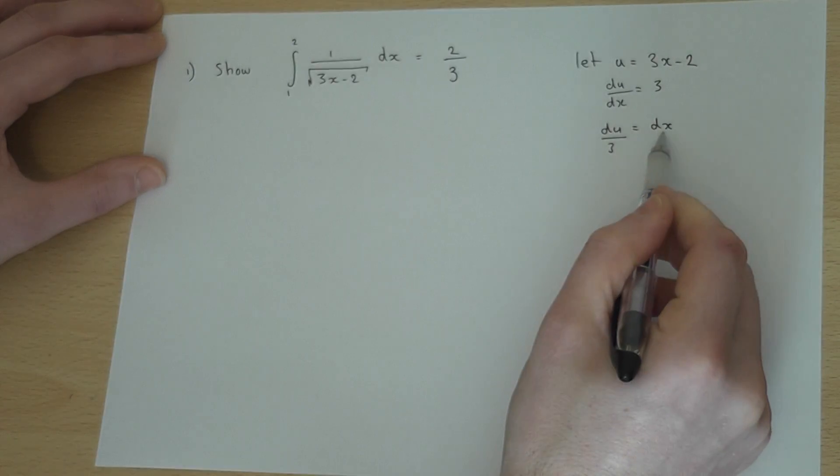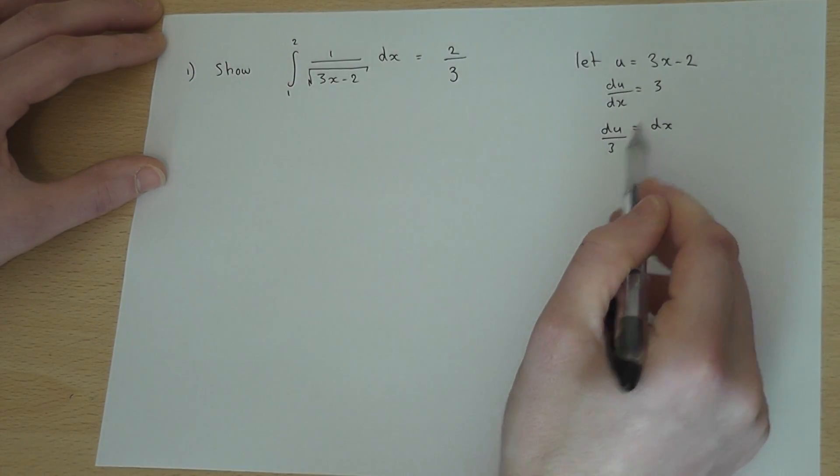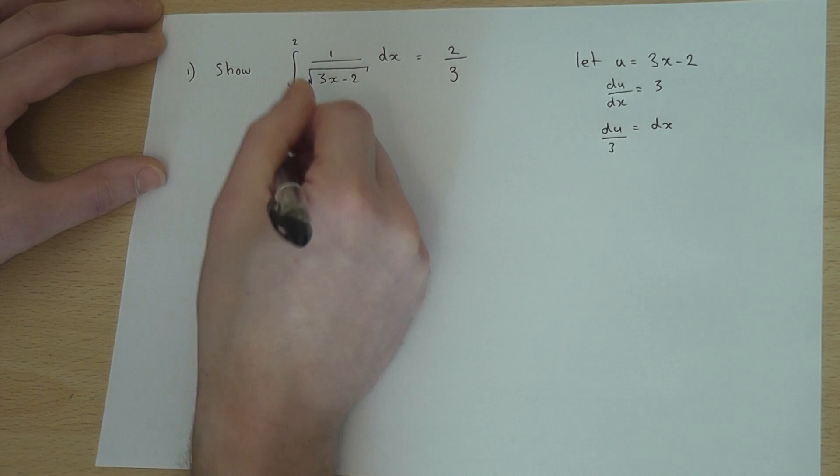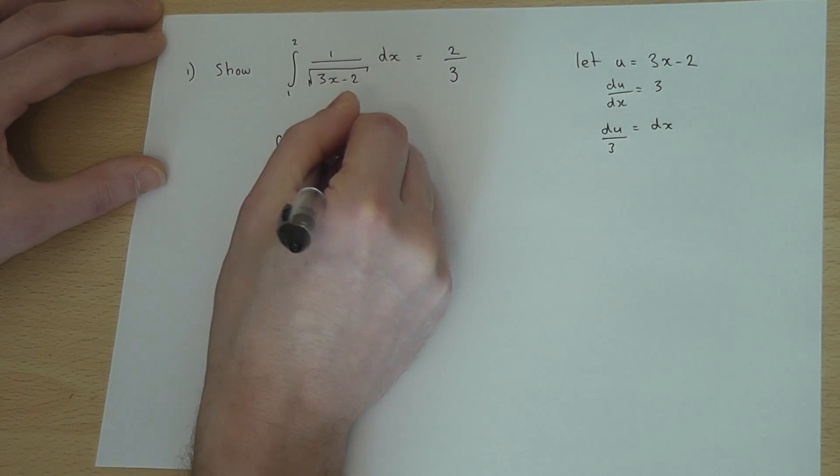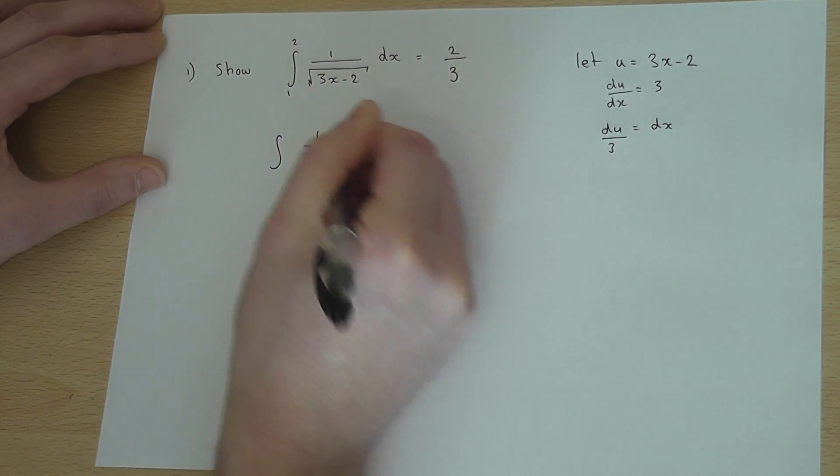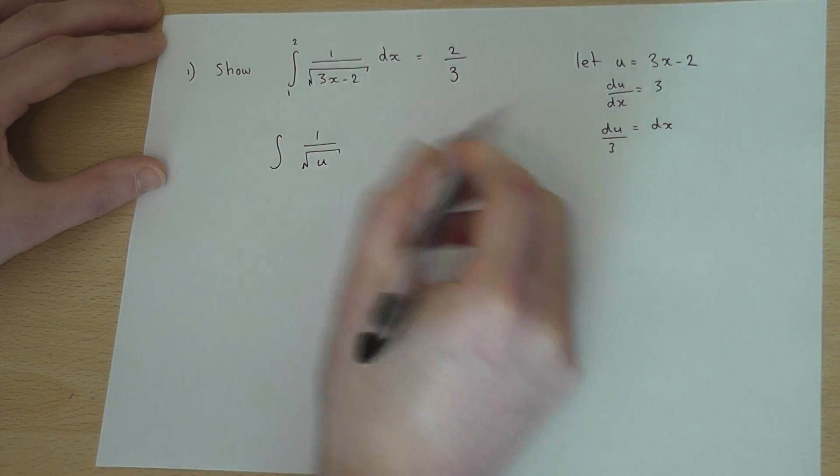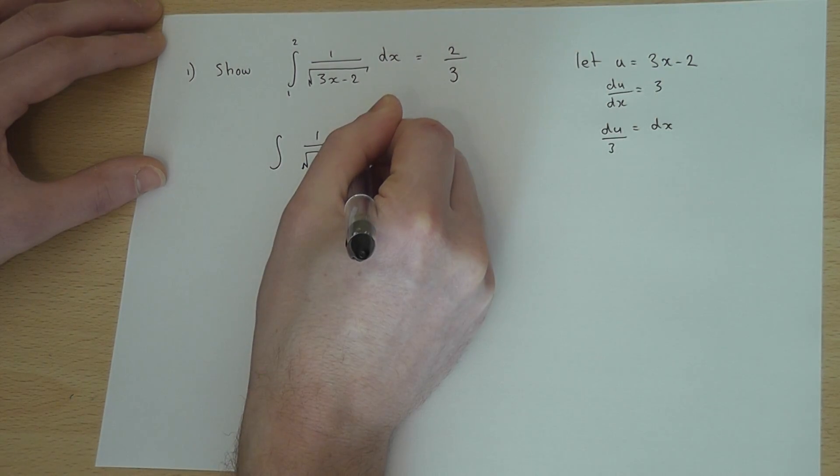So I've now found dx in terms of du. So if I look at this integral here, I've got the integral of 1 over the square root of u, and dx has become du over 3.